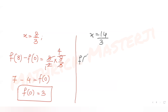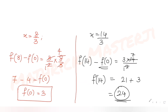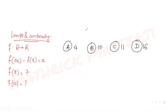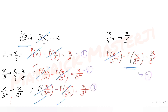Now substituting x = 14/3 into f(3x) - f(0) = 3x/2, we get f(14) - f(0) = 3/2 · (14/3) = 7. Therefore f(14) = 7 + f(0) = 7 + 3 = 10. The correct answer is 10, which matches option B.